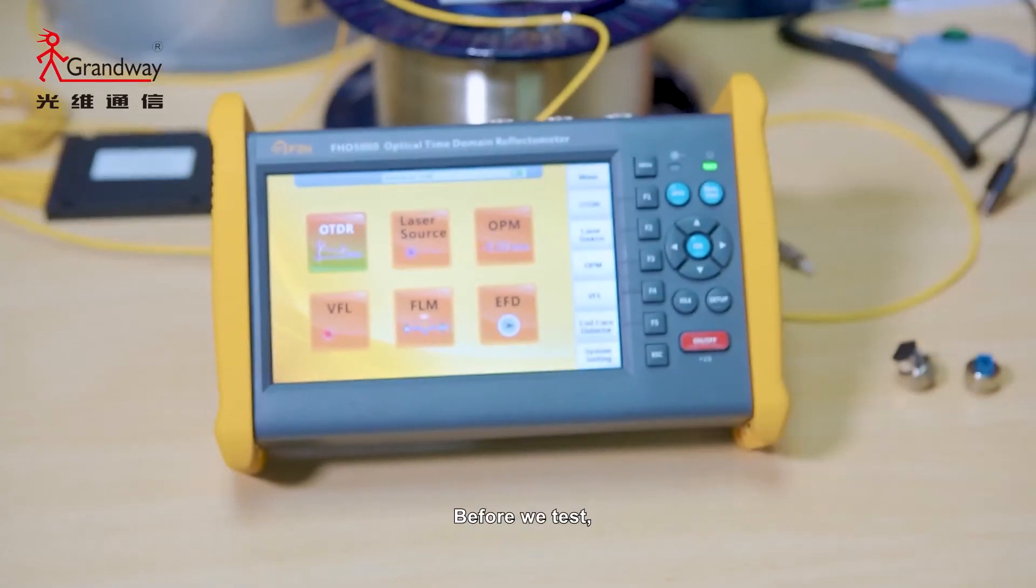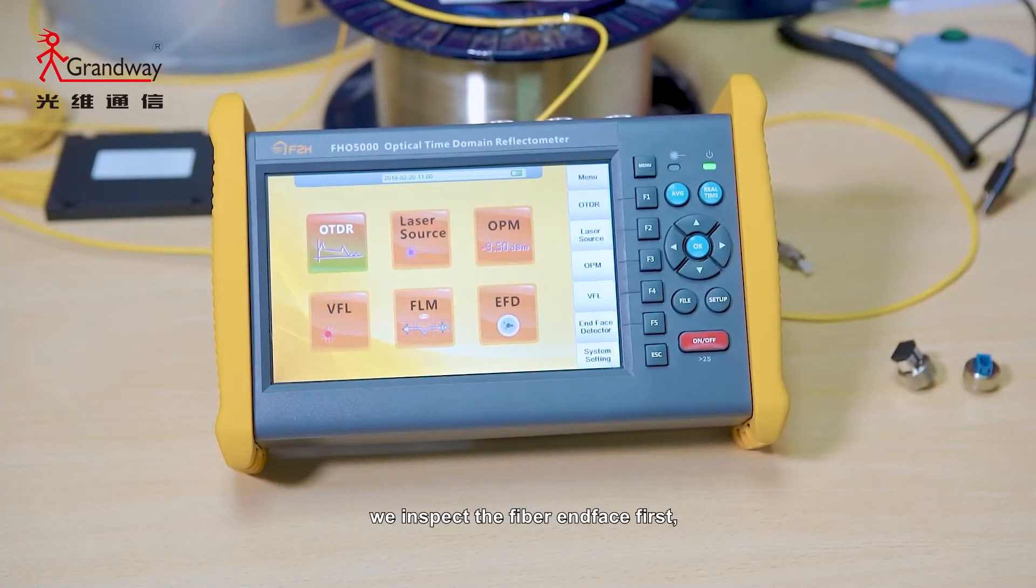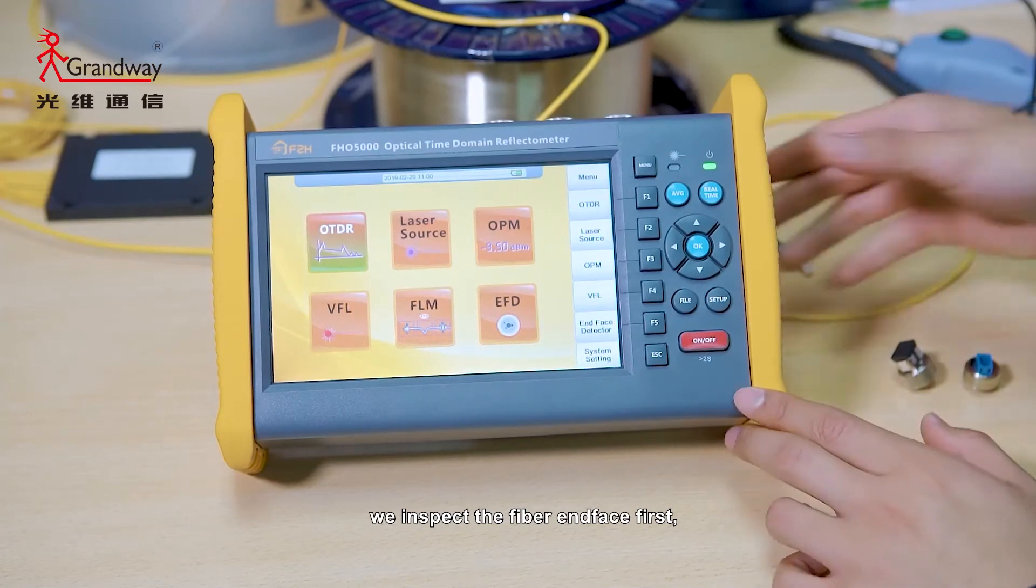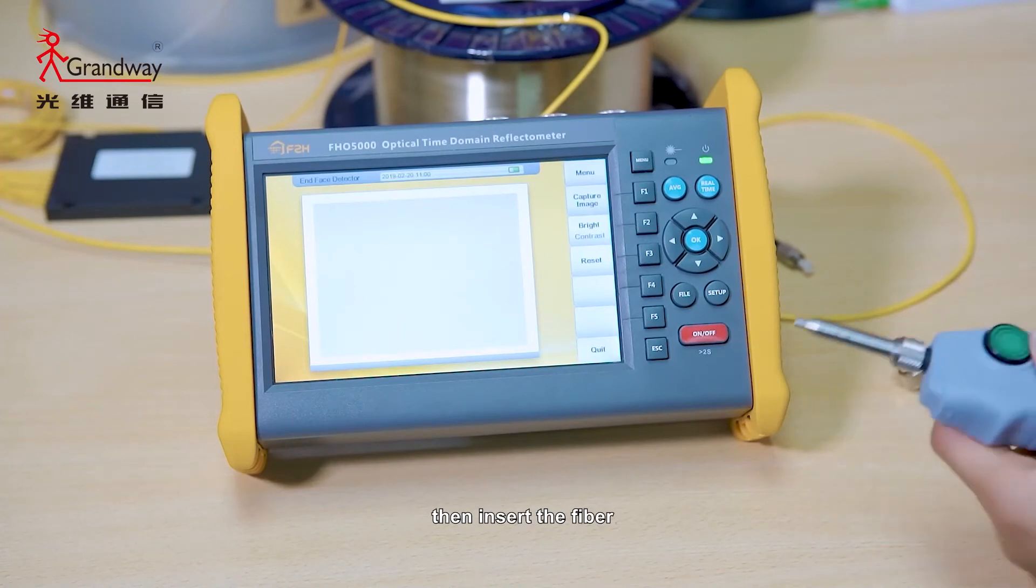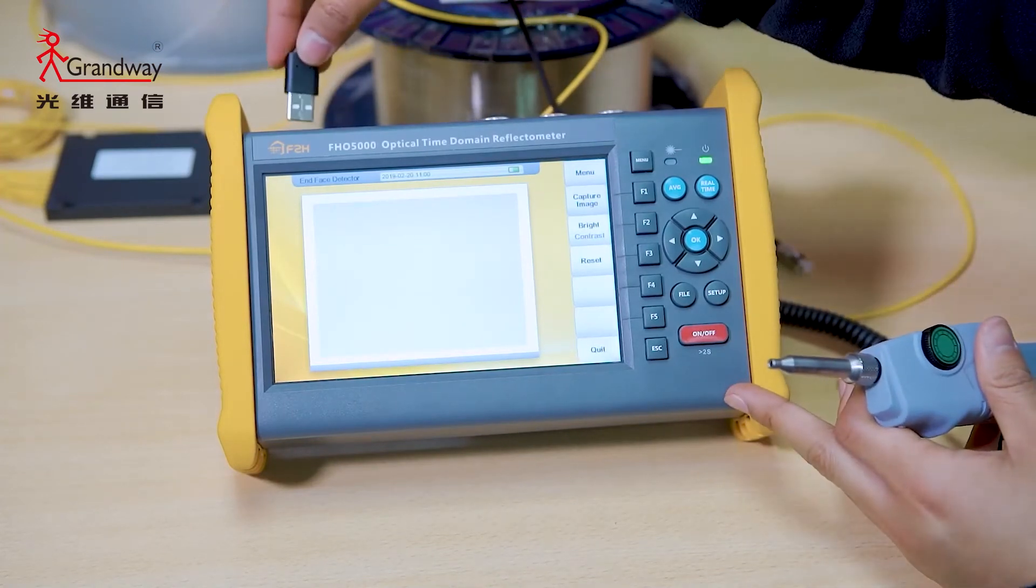Before we test, we inspect the fiber interface first. Press EFD, then insert the fiber scope.